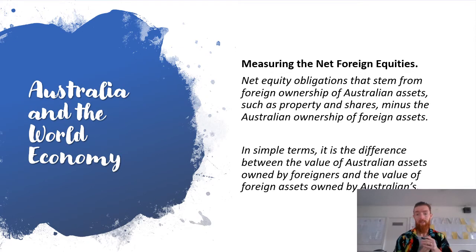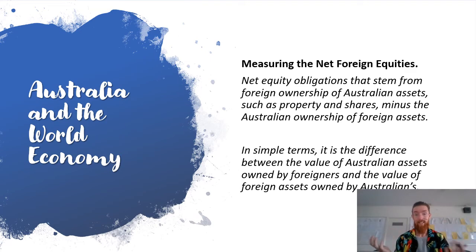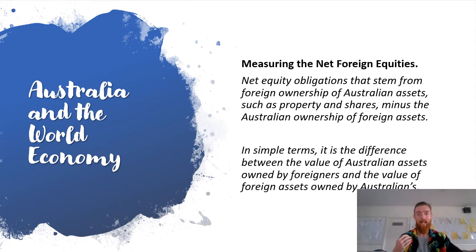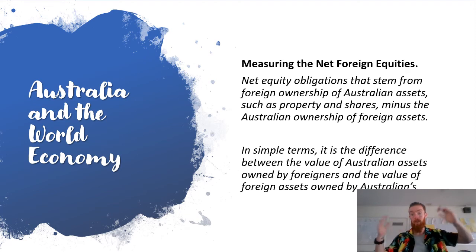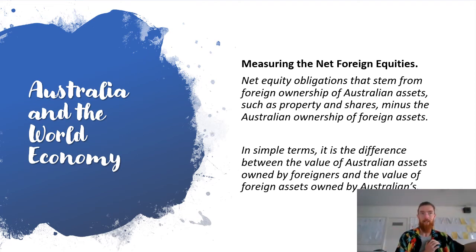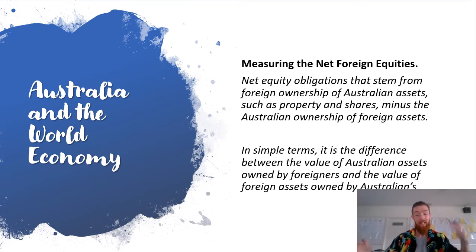In terms of how net foreign debt and net foreign equity have appeared in exams over the last decade, it's pretty vague — it tends to be the definitions, what they are, or how economic conditions would affect the overall level. When the economy is slow, net foreign debt tends to rise as the government may need to borrow more money by selling government securities to finance investment. For the most part, it's basically just: what is it? If you can do that, you're on the right track.